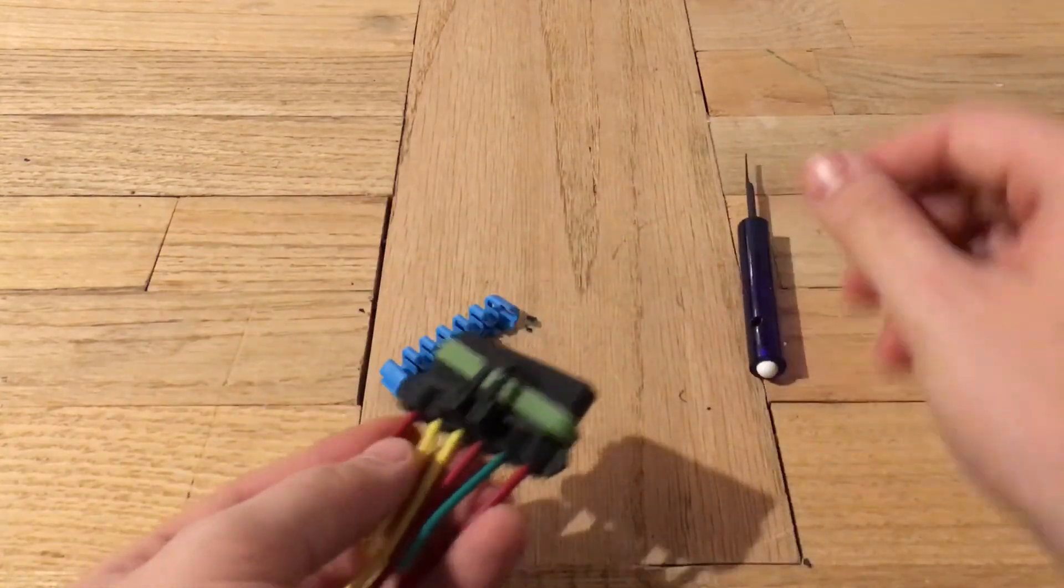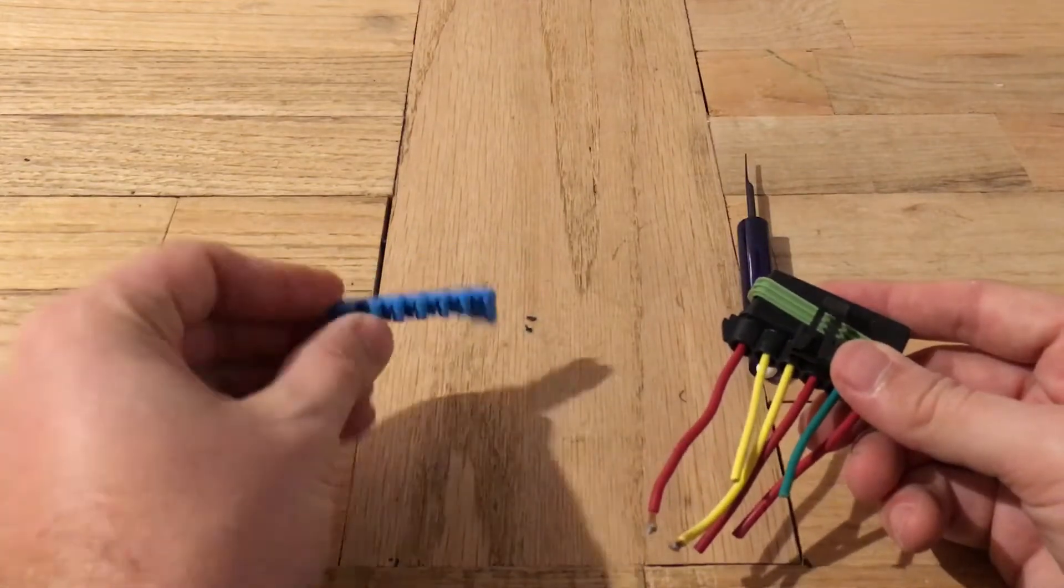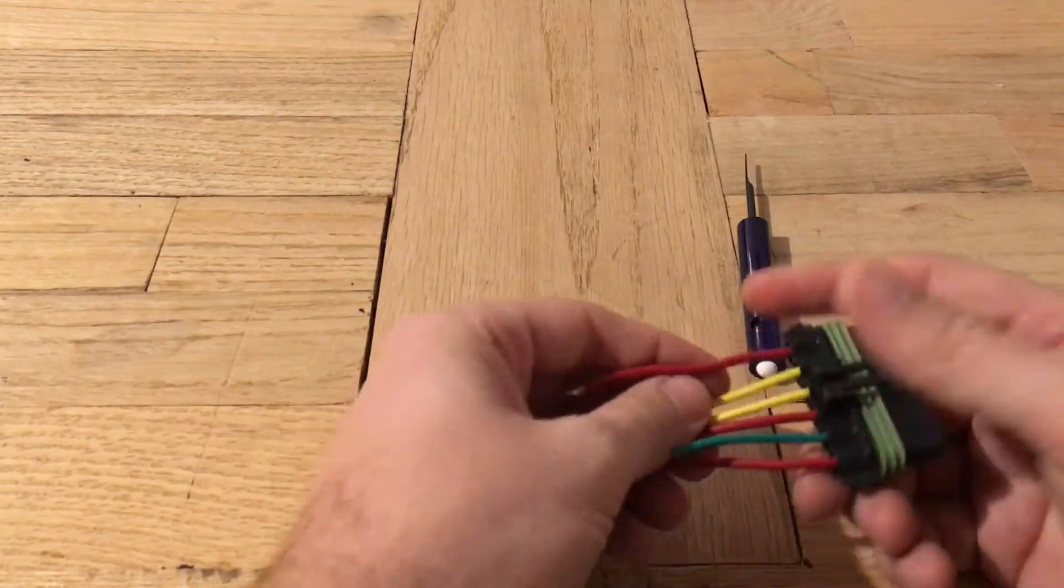Okay, so you just take that off. You get your secondary lock. That is off. Keep that. Don't lose that. You're going to need it.